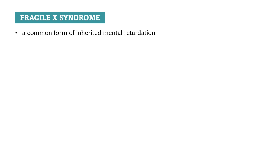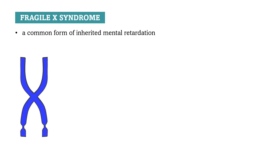Fragile X syndrome is a very common form of inherited mental retardation. To understand the disease, it is first important to realize that some chromosomes contain the so-called fragile sites — regions of the chromosome that can form gaps or constrictions that may break under certain conditions.